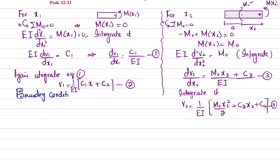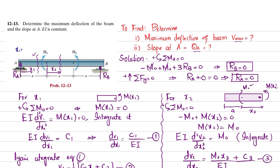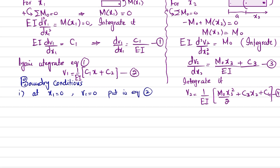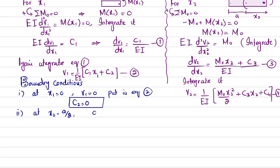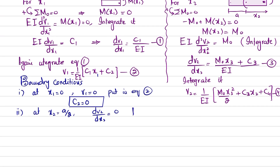Boundary conditions: First, at x1 = 0, v1 = 0. Substituting into Equation 2: the x1 term vanishes and v1 = 0, so C₂ = 0. Second boundary condition: at x2 = a/2, dv₂/dx₂ = 0. This is because the beam deflects symmetrically and the slope is zero at the midpoint of the second region. We substitute into Equation 3.